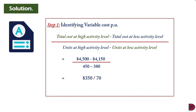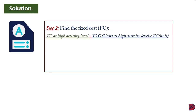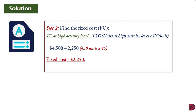Step two: find the fixed cost. We take the total cost at the highest activity level ($4,500) and subtract the total variable cost. The total variable cost is found by multiplying 450 units (highest activity level) by $5 per unit, giving $2,250. Therefore, the fixed cost = $4,500 − $2,250 = $2,250.